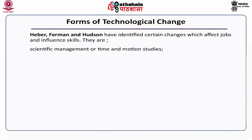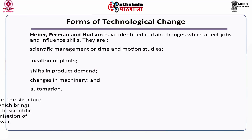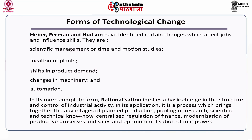These changes are: scientific management or time and motion studies, location of plants, shifts in product demand, changes in machinery, and automation. In its more complete form, rationalization implies a basic change in the structure and control of industrialized activity. In its application, it is a process which brings together the advantages of planned production, pooling of research, scientific and technical know-how, centralized regulation of finance, modernization of productive processes and sales, and optimum utilization of manpower.